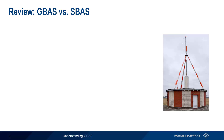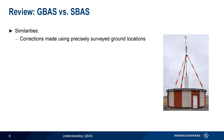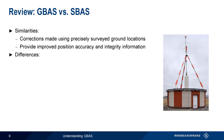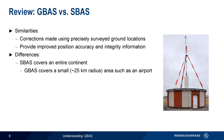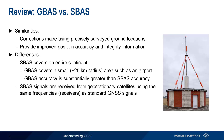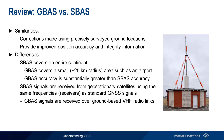Let's review the similarities and differences between GBAS and SBAS. Both technologies provide corrections using measurements made at precisely surveyed ground locations, and these corrections provide both improved position accuracy as well as satellite integrity information. However, GBAS and SBAS differ in important ways. First, an SBAS covers an entire country or continent, whereas GBAS only covers a relatively small area such as an airport — meaning GBAS accuracy is substantially better. Additionally, SBAS signals are received from satellites in space on standard GNSS frequencies, whereas GBAS uses a ground-based VHF radio data link to communicate with nearby aircraft.